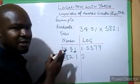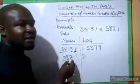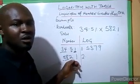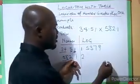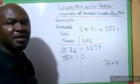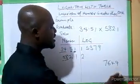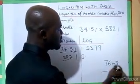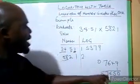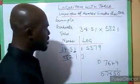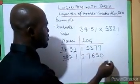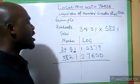For 582.1, the first two digits are 58; go to row 58, column 2. You get 7649. The last digit is 1, so go to the difference column — the difference is also 1, giving 0.0001. Adding: 7649 plus 0001 gives 7650. So the log of 582.1 is 2.7650.